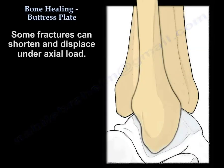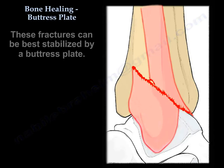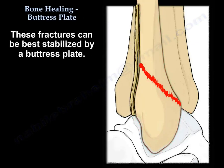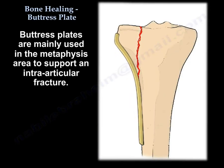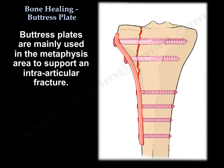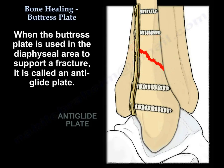Some fractures can shorten and displace under axial load, and these fractures can be best stabilized by a buttress plate. Buttress plates are mainly used in the metaphysis area to support an intra-articular fracture. When used in the diaphyseal area to support a fracture there, it is called an anti-glide plate.